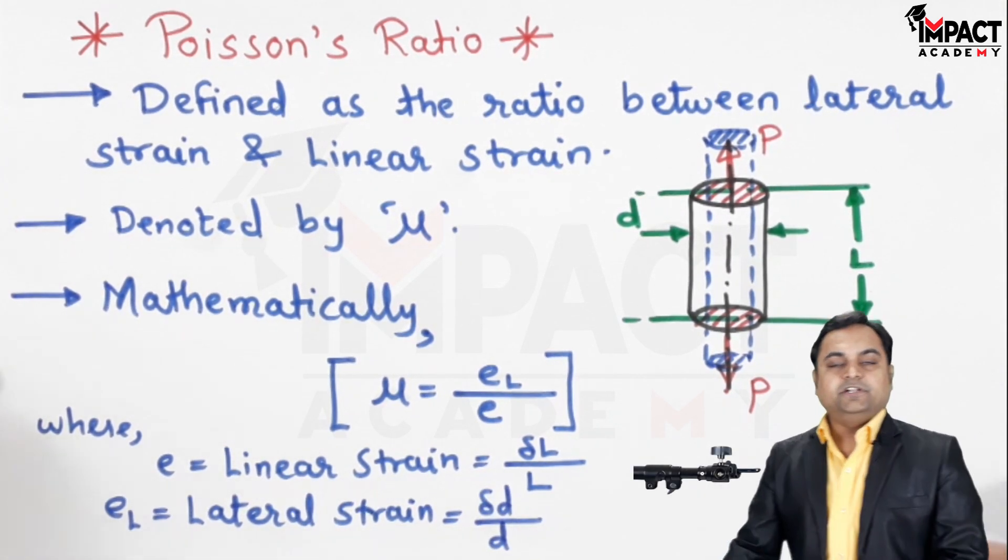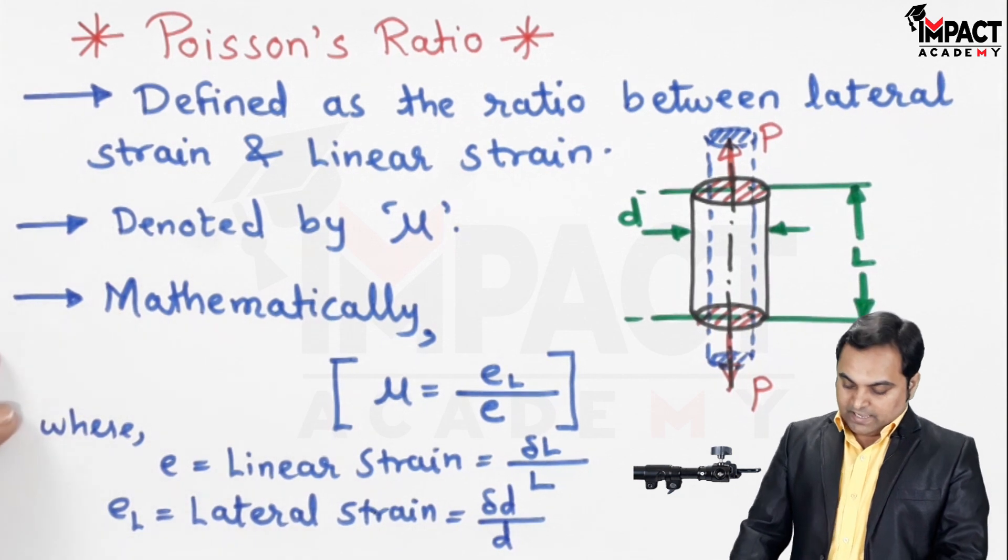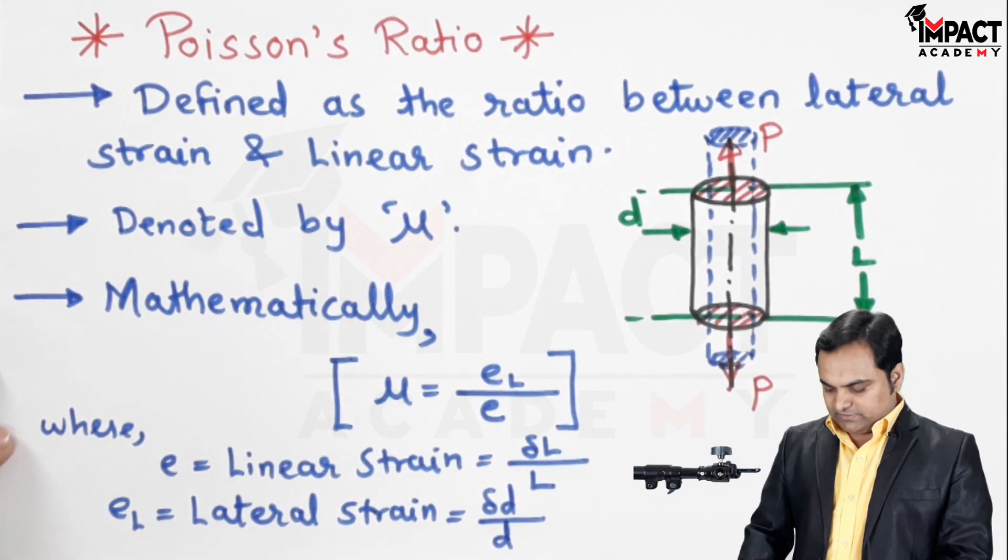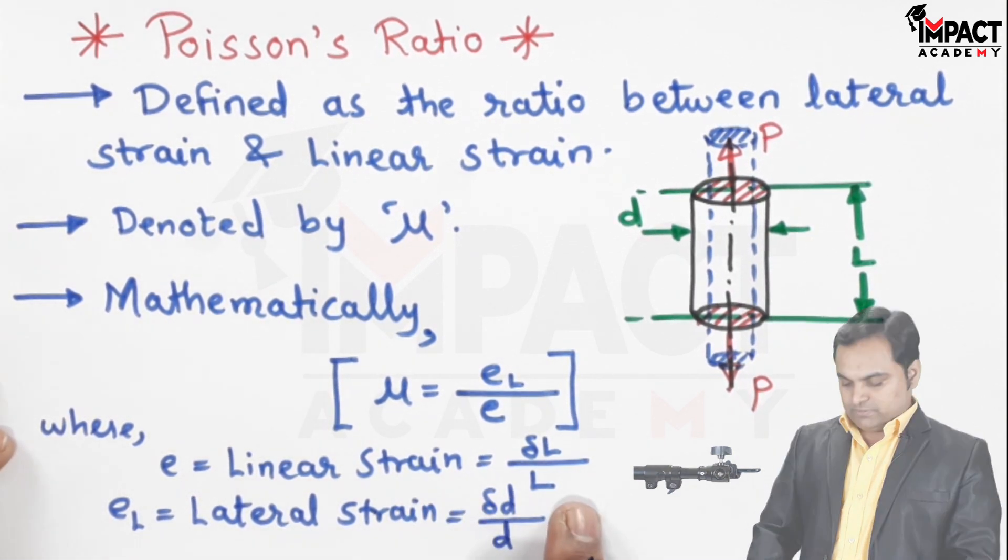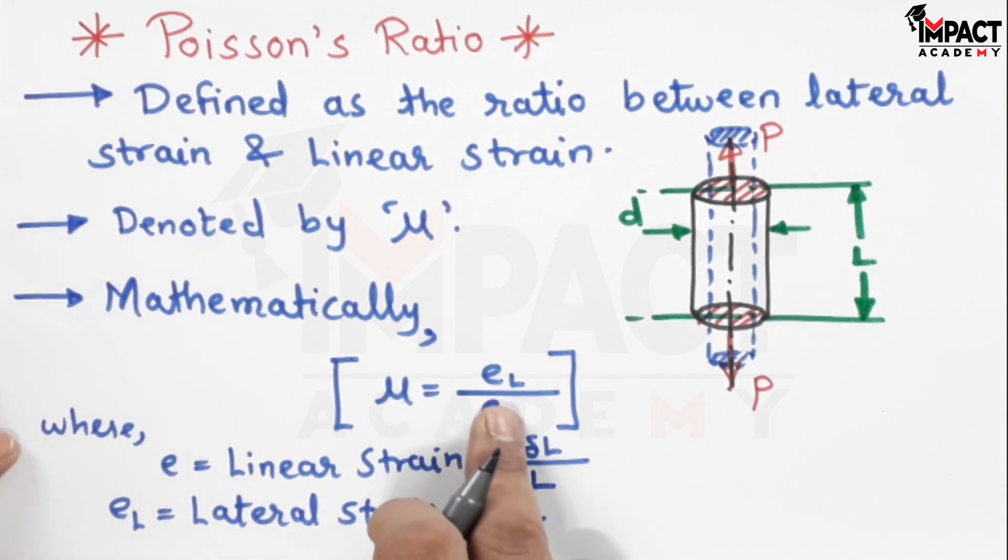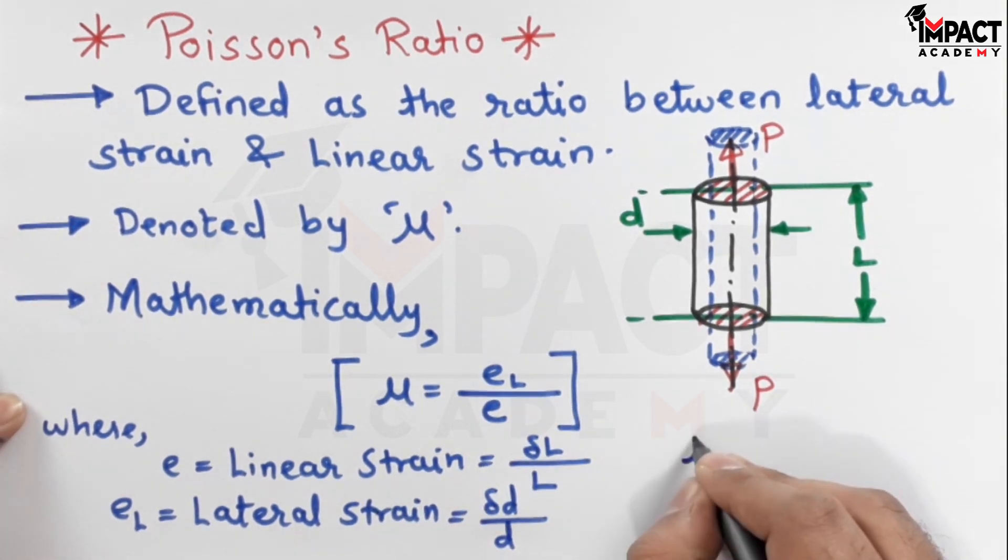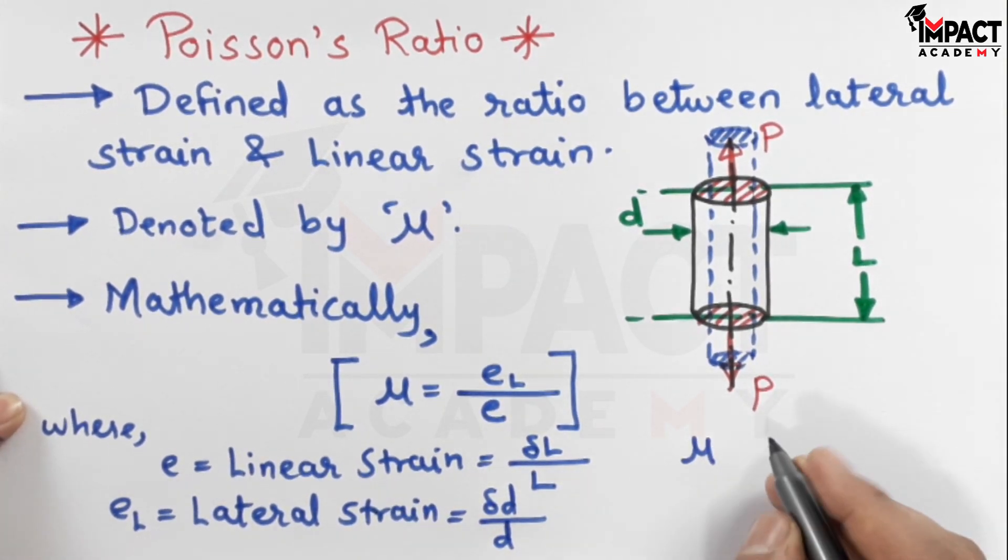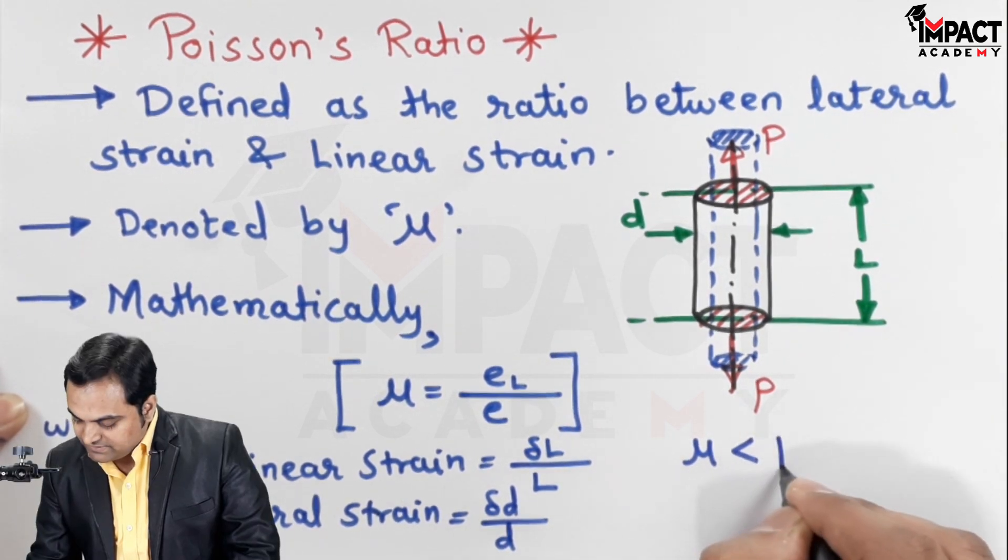It is change in diameter upon original diameter, and always it will happen that the linear strain value would be more whereas the lateral strain would be less, so mu value would always be less than one.